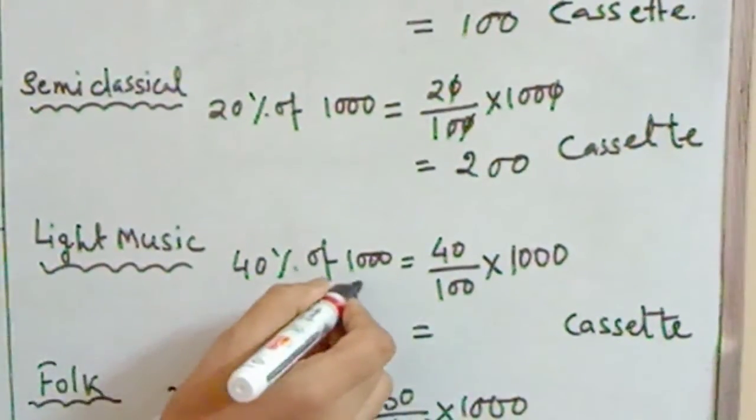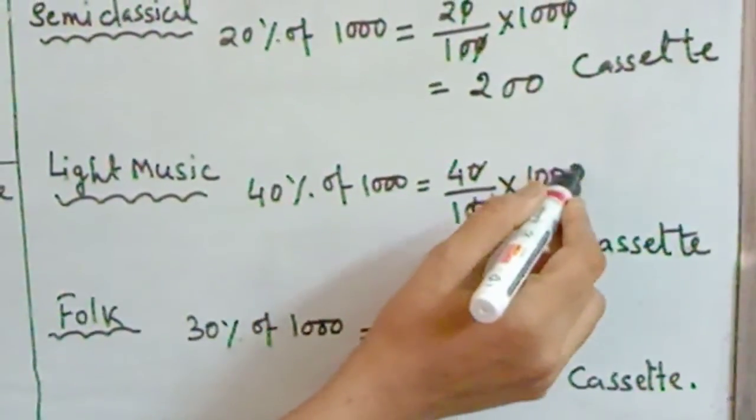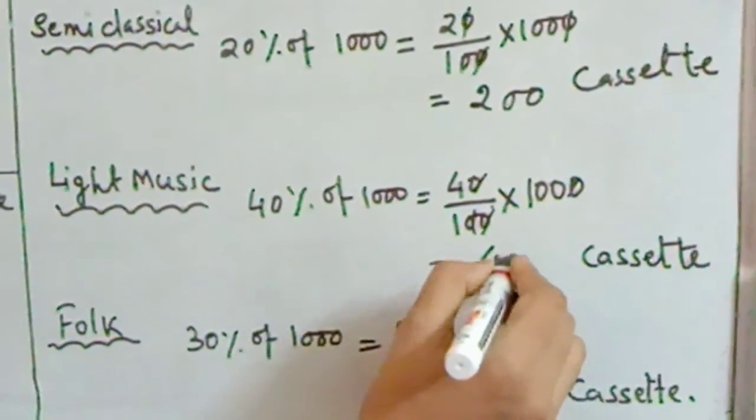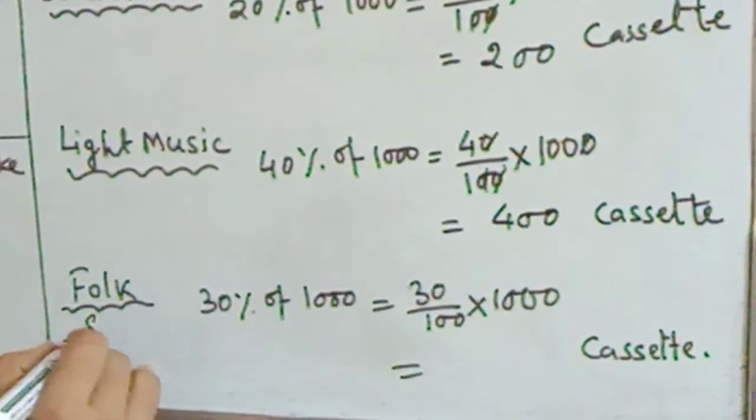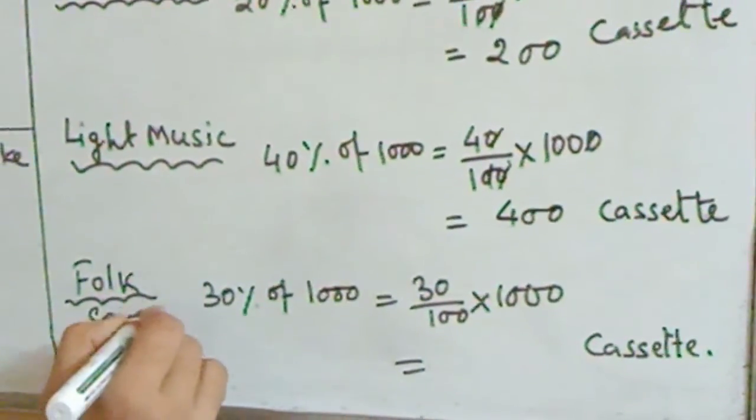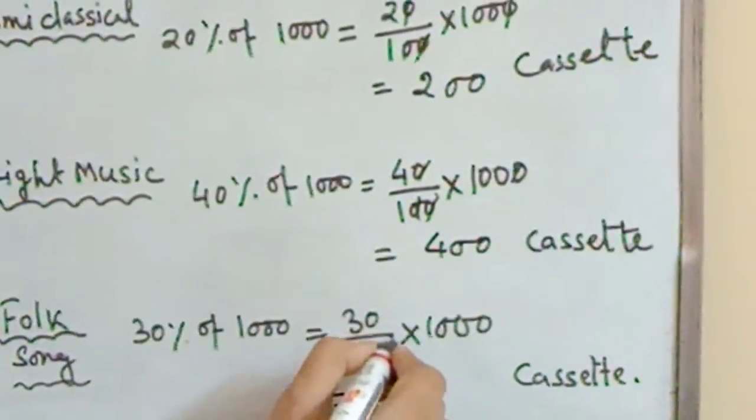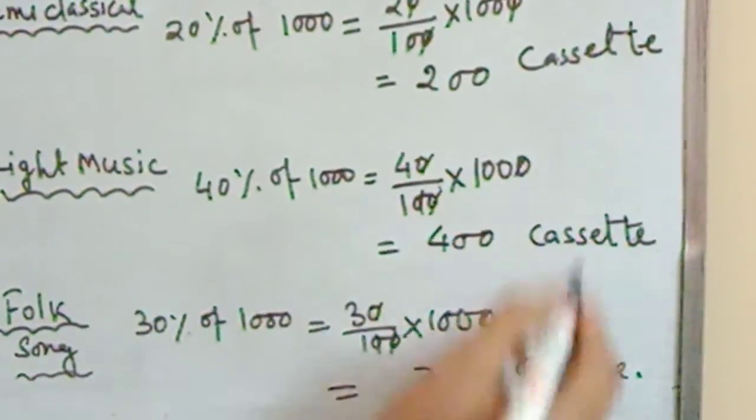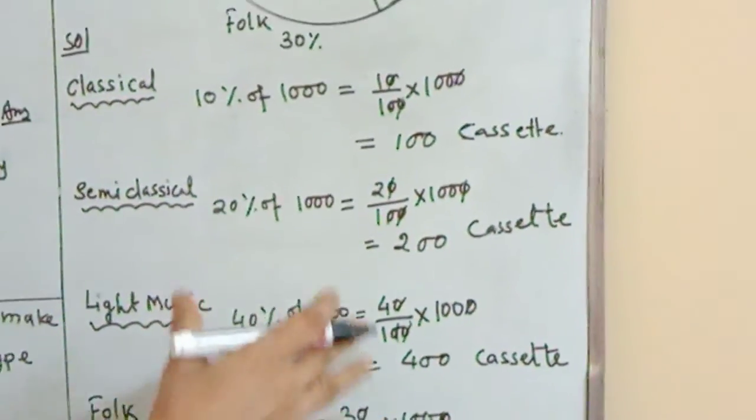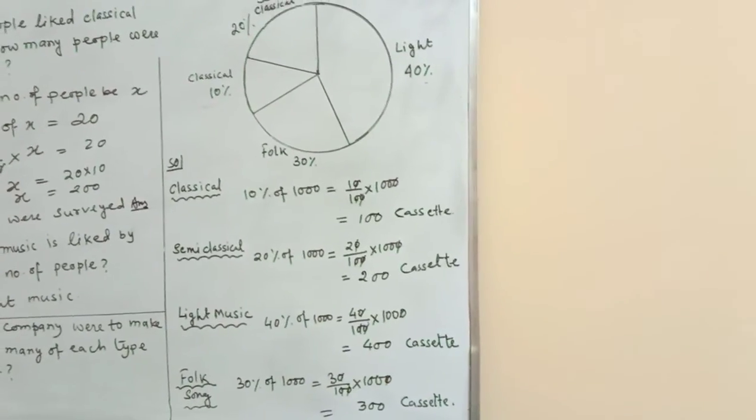Light music: 40% of 1000, 40 by 100 into 1000, equals 400 cassettes. Folk music: 30% of 1000, 30 by 100 into 1000, that is 300 cassettes. So all the different types of cassettes, how many cassettes are needed, you can find in this way. Practice this.